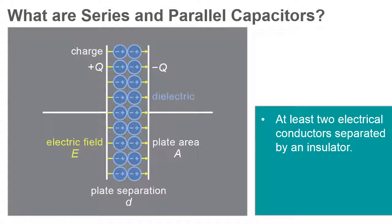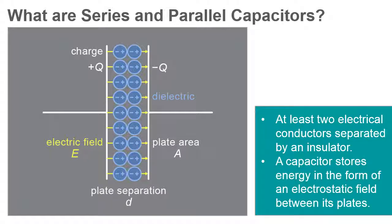Unlike a resistor, an ideal capacitor does not dissipate energy. A capacitor stores energy in the form of an electrostatic field between its plates.